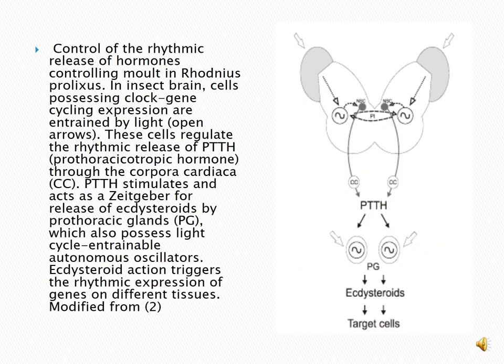Control of the rhythmic release of hormones; controlling moulting in Rhodnius prolixus. This picture describes the mechanism of action. Insect brain cells possessing clock gene cycling expression are entrained by light. These cells regulate the rhythmic release of PTTH, prothoracicotropic hormone, through the corpora cardiaca.